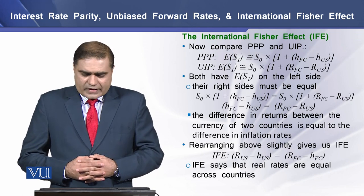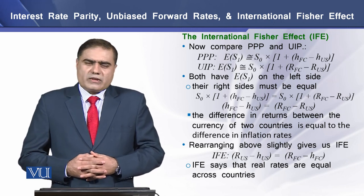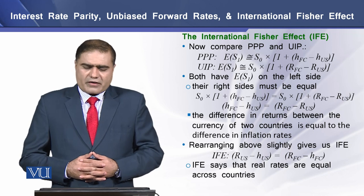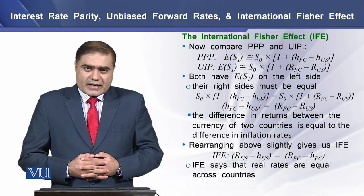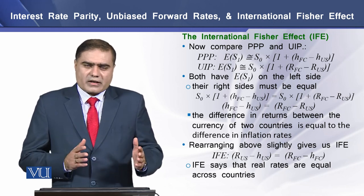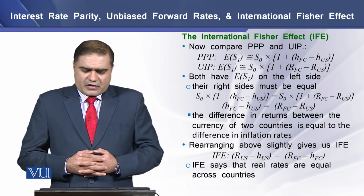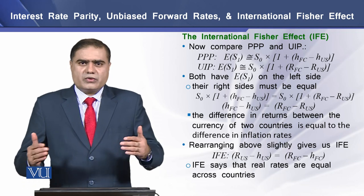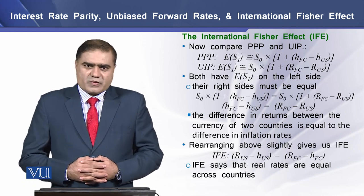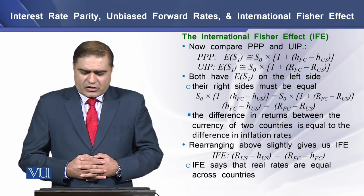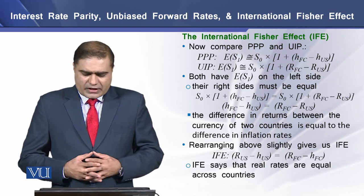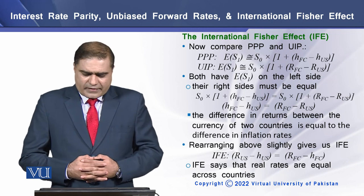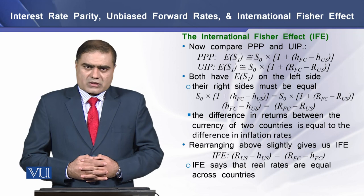Now let's talk about the International Fisher Effect. We compare purchasing power parity and the uncovered interest rate parity (UIP). Both equations have the expected spot exchange rate on their left-hand side, so their right-hand sides must be equal. If we equalize the right-hand sides, we see that the difference between inflation rates equals the difference between the interest rates of the two countries. Rearranging this equation, we see that real rates are essentially equal across countries.